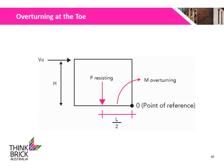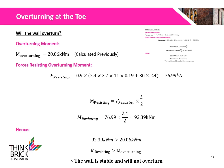We will now check for overturning at the toe. We can see all of the actions that contribute to the overturning and resisting of the wall at the toe. The overturning moment was calculated previously as 20.06 kNm. The force resisting the overturning moment is the factored sum of the self-weight and dead load, calculated to be 76.99 kN. The resisting moment is calculated to be 92.39 kNm, which is greater than the overturning moment. Therefore, the wall is stable and will not overturn.